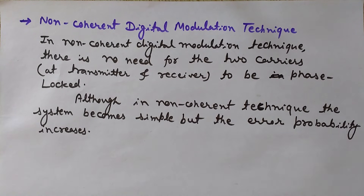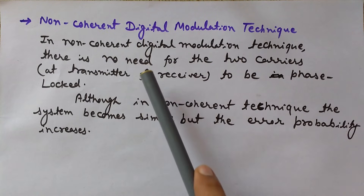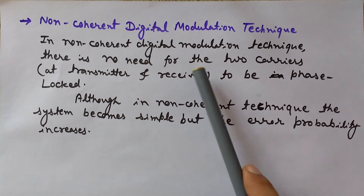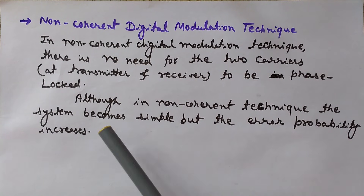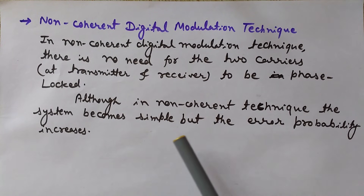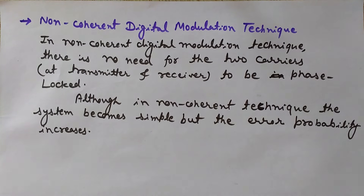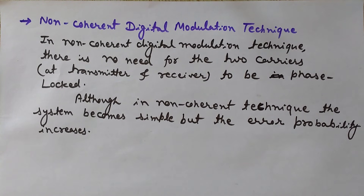The system is simple because there is no need for these two carriers to be phase-locked or kept in synchronism. However, the problem with the non-coherent technique is that the error probability increases. This was the concept of coherent and non-coherent digital modulation techniques, along with their advantages and disadvantages.